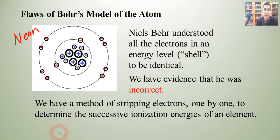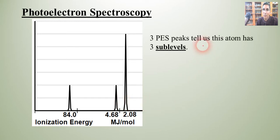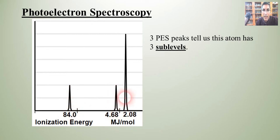Let's take a look at the photoelectron spectroscopy readout for neon. We have two energy levels in neon, but as you can see, we have three peaks. These three PES peaks tell us that this atom has three sublevels, and each peak in the PES diagram represents a sublevel.